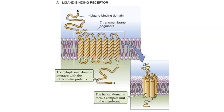For example, acetylcholine receptors — when they bind with acetylcholine, they will make a channel open, specifically a sodium channel. When the chemical binds, it will cause entry of sodium into the cell.